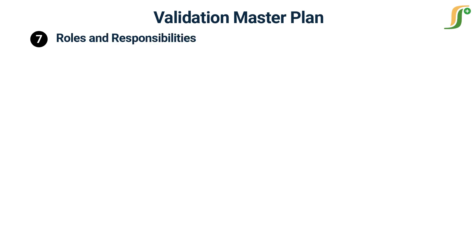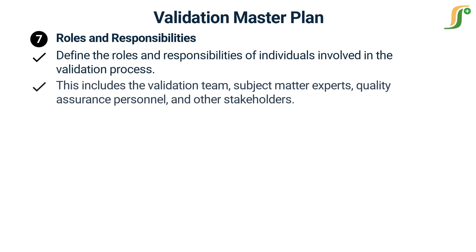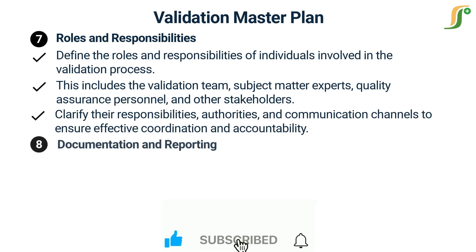The seventh step is to define roles and responsibilities. Define the roles and responsibilities of individuals involved in the validation process. This includes the validation team, subject matter experts, quality assurance personnel, and other stakeholders. Clarify their responsibilities, authorities, and communication channels to ensure effective coordination and accountability.